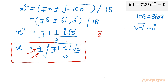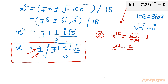A second approach uses complex numbers. From the original equation, x¹² = 64/729 = (2/3)⁶. Using Euler's identity and De Moivre's theorem, we write 1 = e^(i·2kπ), so x¹² = (2/3)⁶ · e^(i·2kπ). Taking the 12th root of both sides gives the general solution.